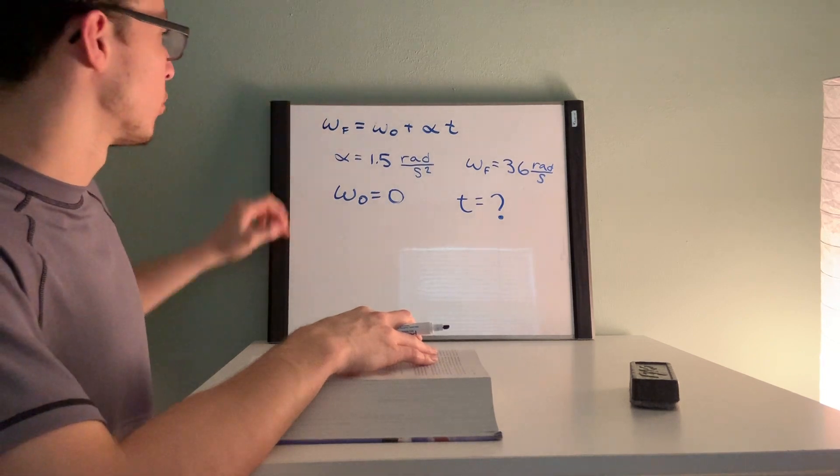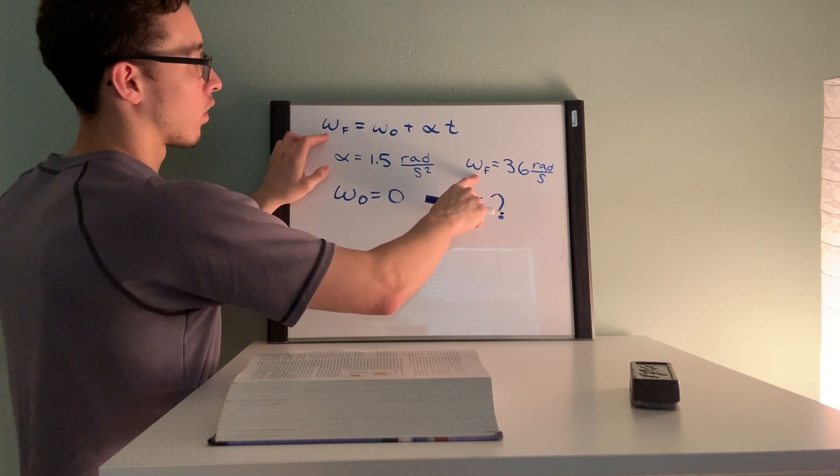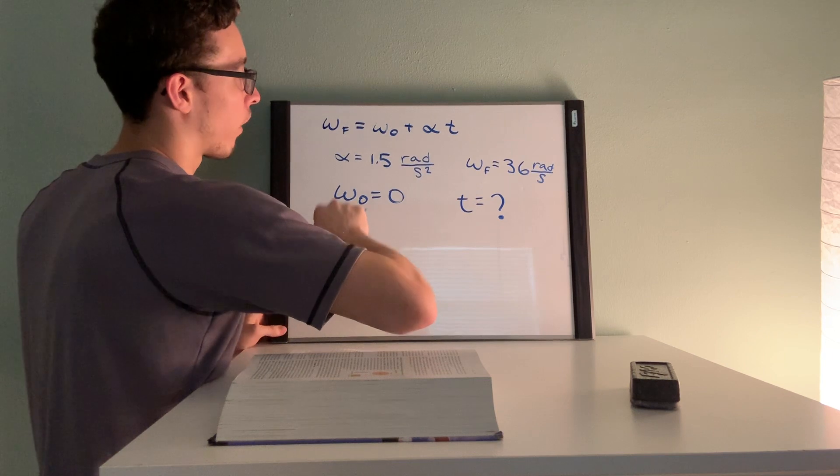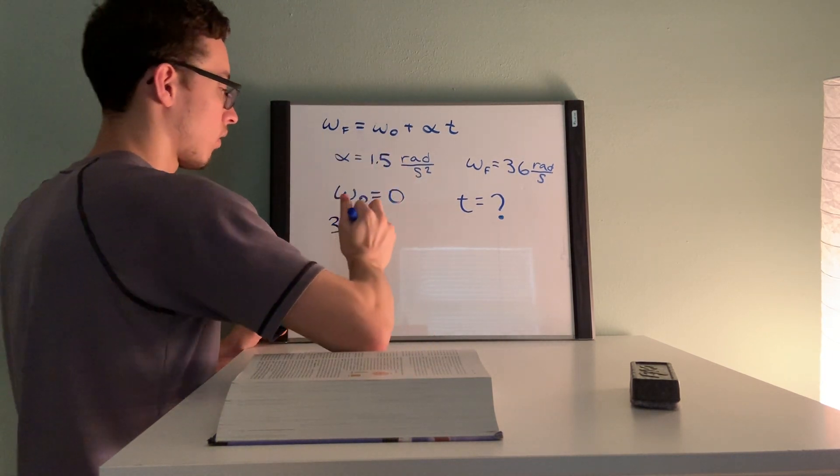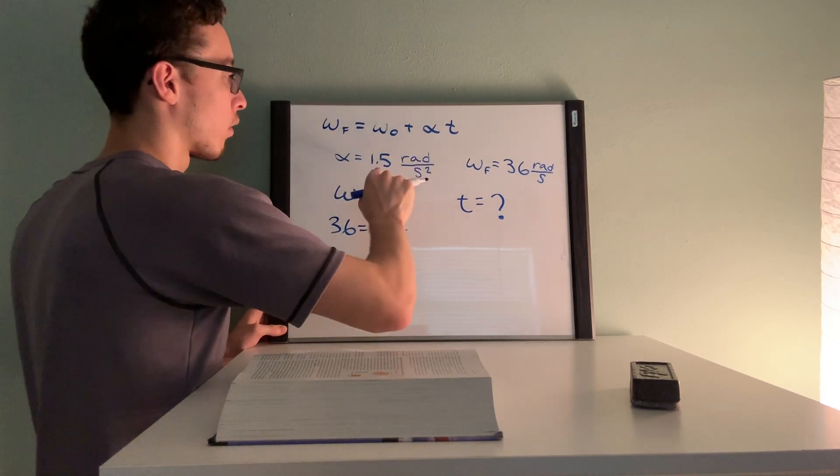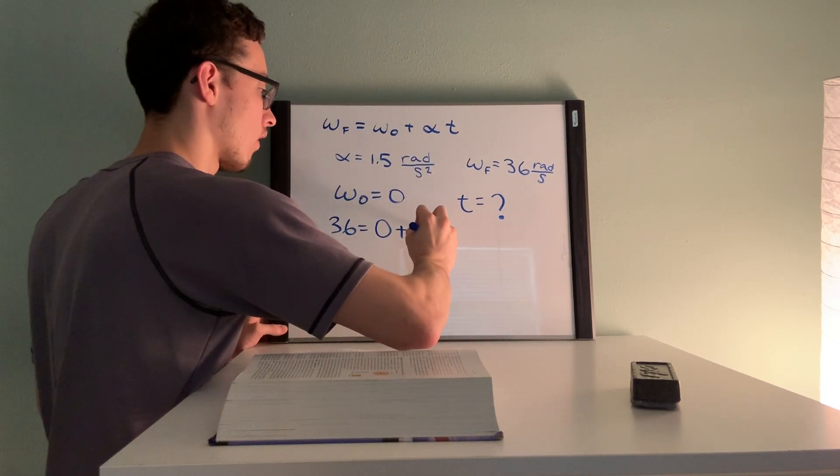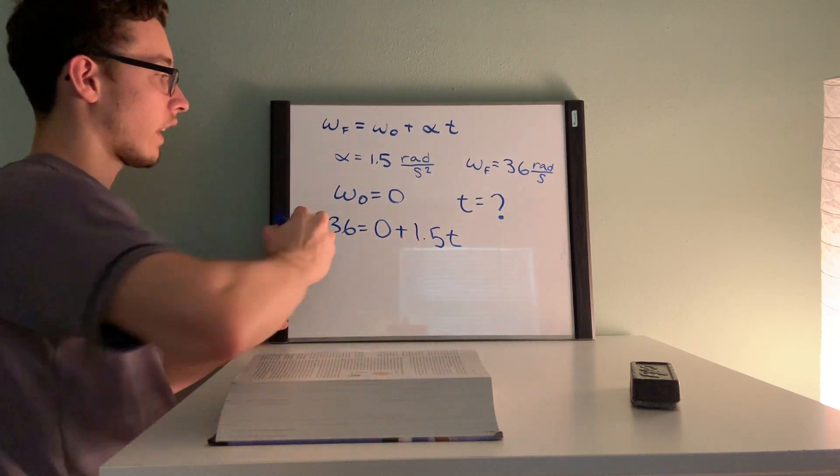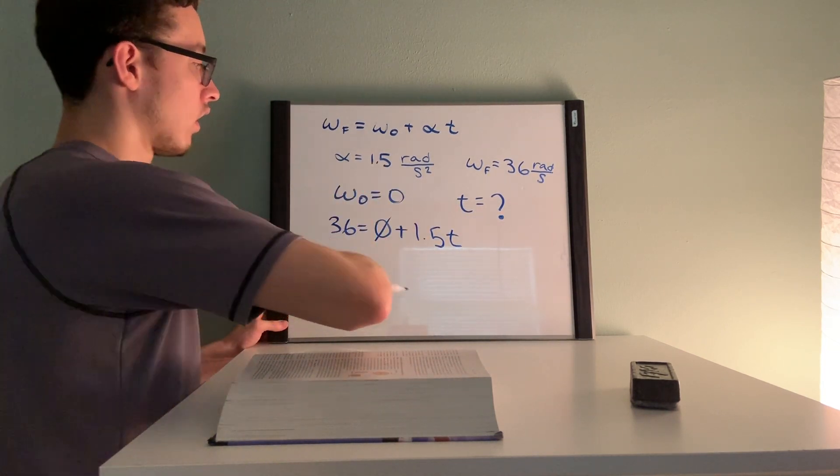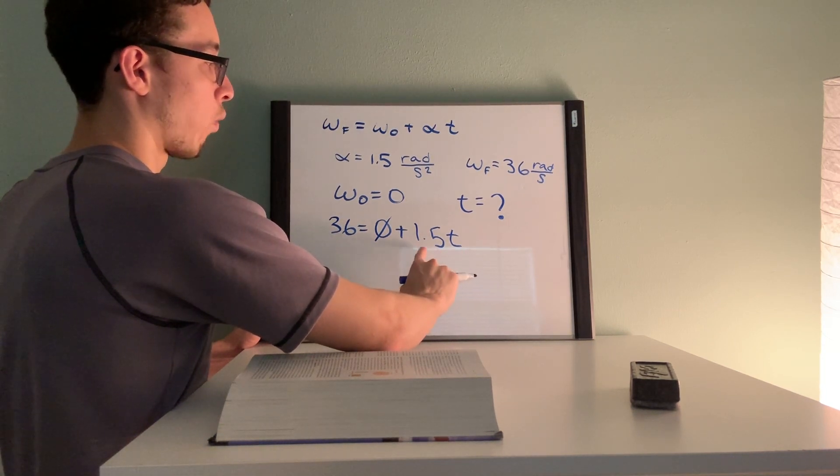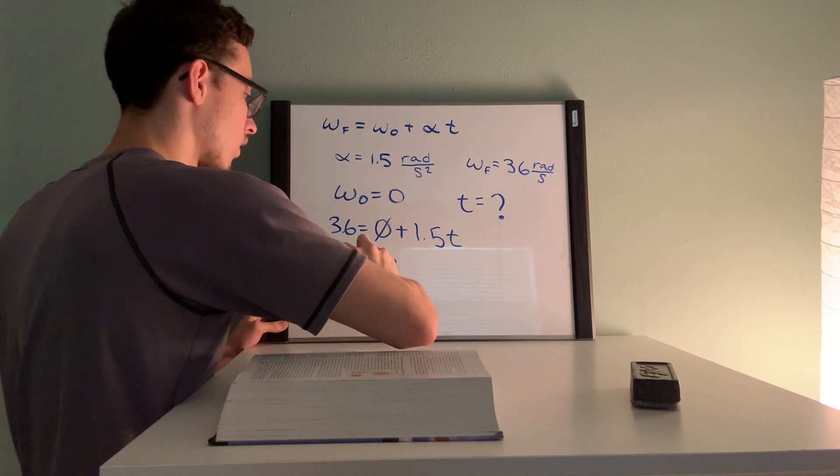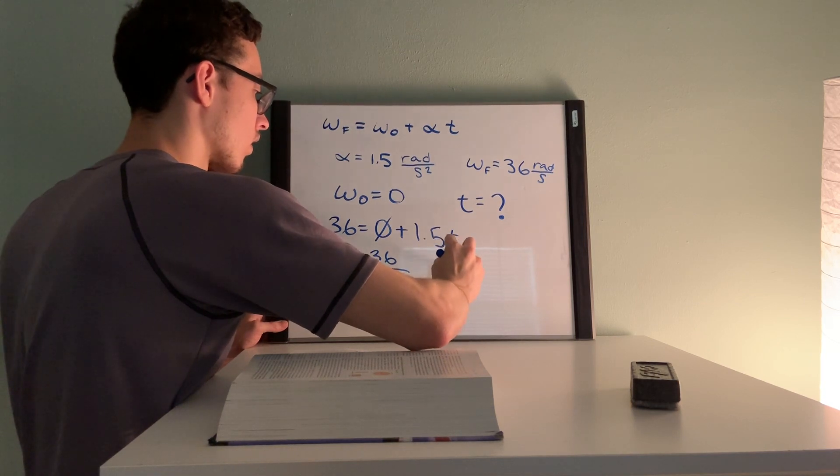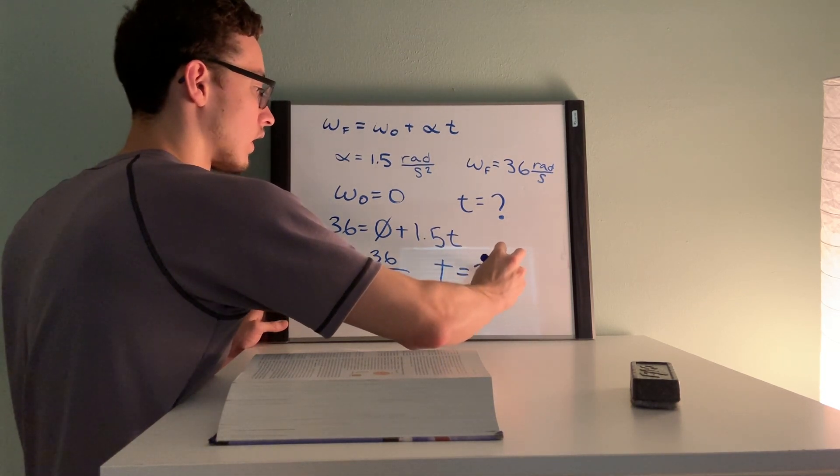So we can solve for that using this equation right here. Plug in the numbers, so final angular velocity is 36 which is equal to zero plus acceleration which is 1.5 times time. So just divide both sides, solve for t divided by 1.5. We get t is equal to 36 divided by 1.5. If you put this in the calculator you should get 24 seconds.